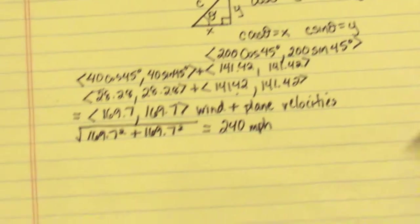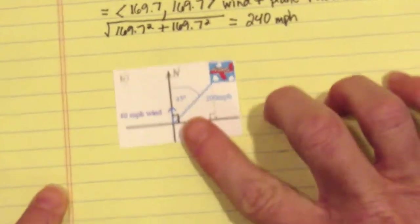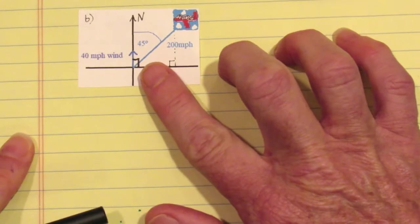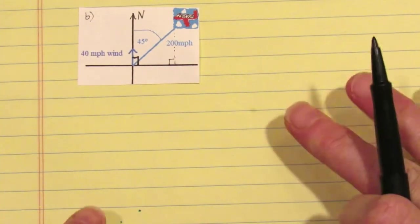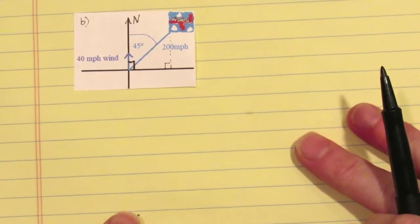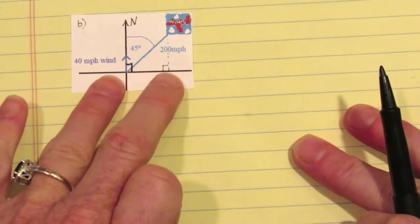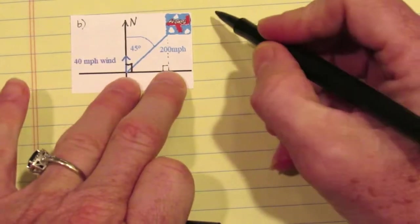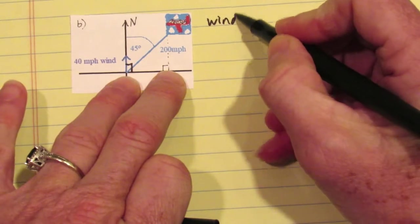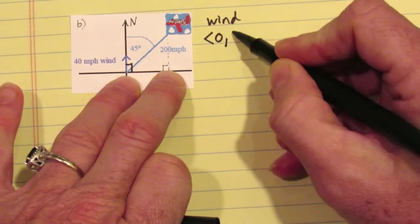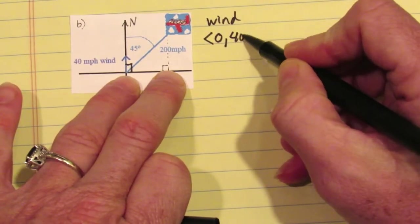But we could have other situations. For example, what if the wind is now blowing directly north with the same plane? The vector for the wind is now 0 for x and 40 for y.